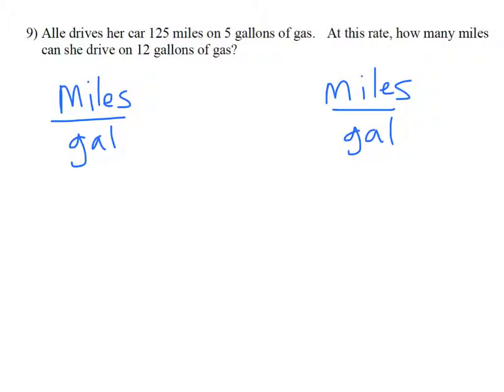So what do I know? I know that she can drive 125 miles on 5 gallons of gas. That's my first ratio. My second ratio, do I know miles or do I know gallons? I know that she has 12 gallons of gas. The unknown is how many miles she can drive, so I'm going to let that be my variable.